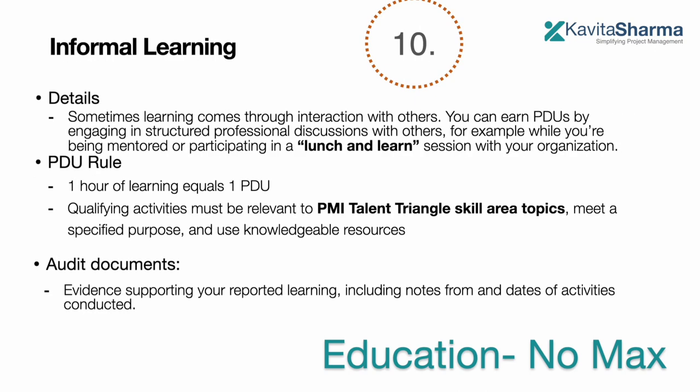The last education method is informal learning. When you sit and discuss with people — like brown bag sessions or lunch-and-learn sessions — this also earns you PDUs. One hour of learning equals one PDU. The learning should be relevant to your profession per the PMI Talent Triangle, and supporting documents include notes, date of activities, and minutes of meeting.